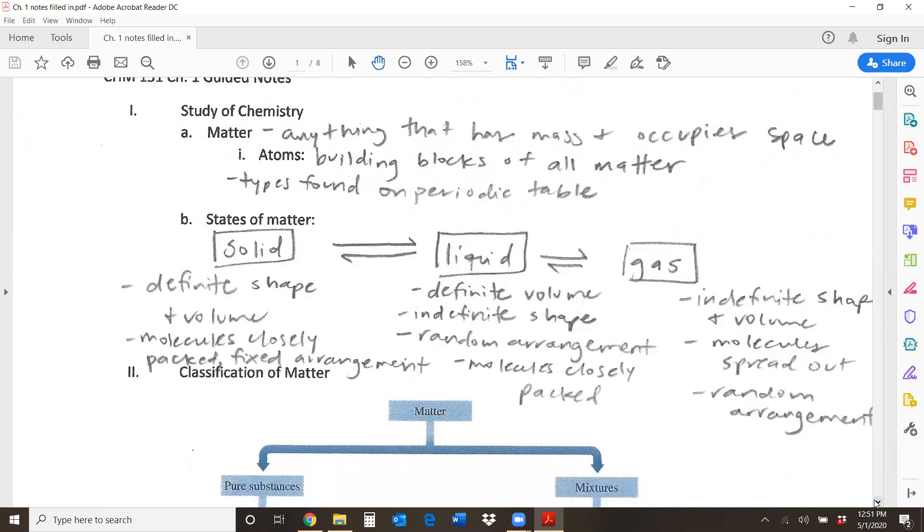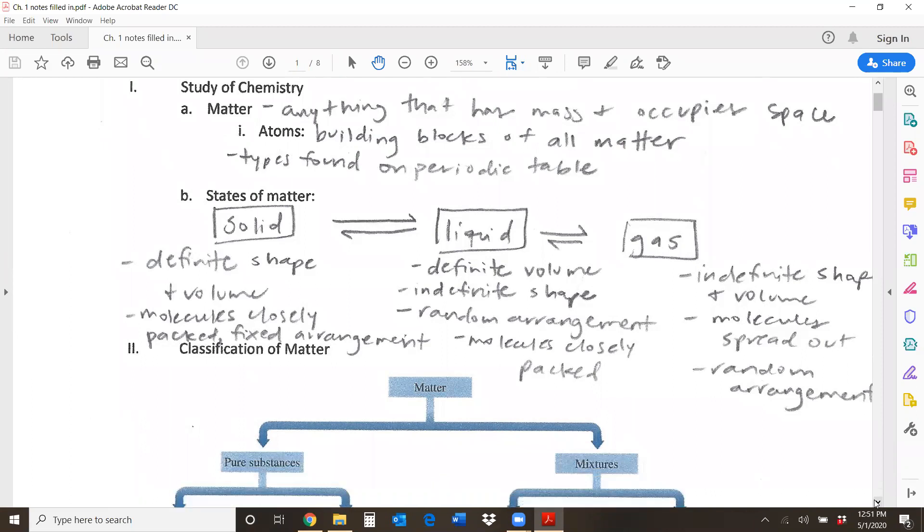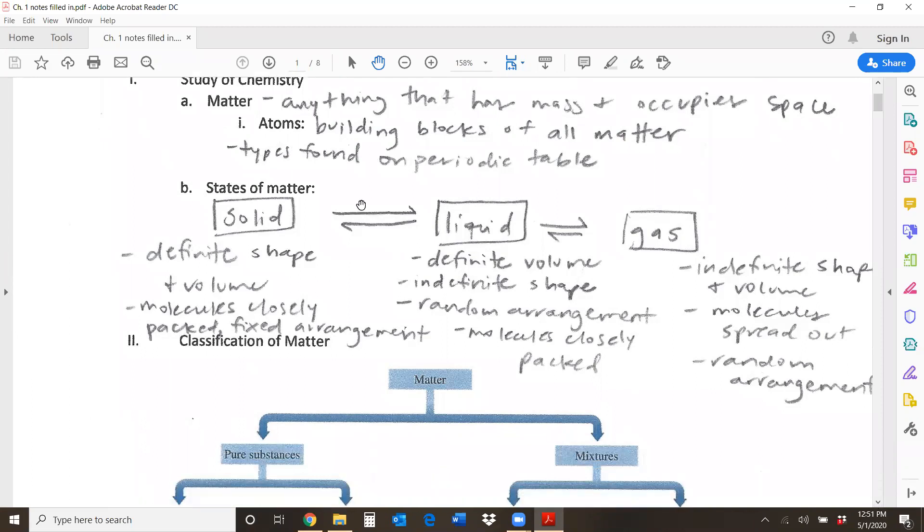Another way we talk about matter is what state of matter it's in at a certain time. So there's solid, liquid, and gas. Solid going to liquid is melting. Liquid going to gas is evaporation or boiling. Gas back down to liquid as condensation. And liquid back down to solid is freezing.